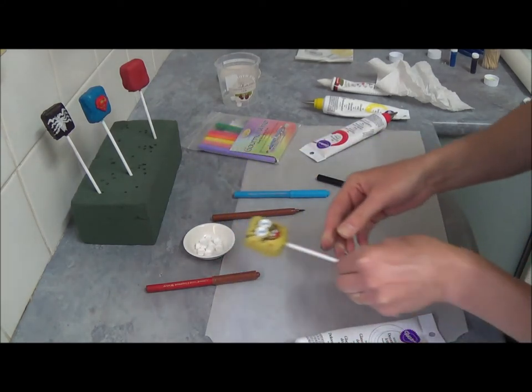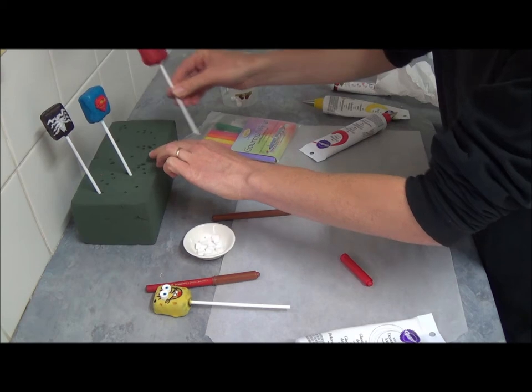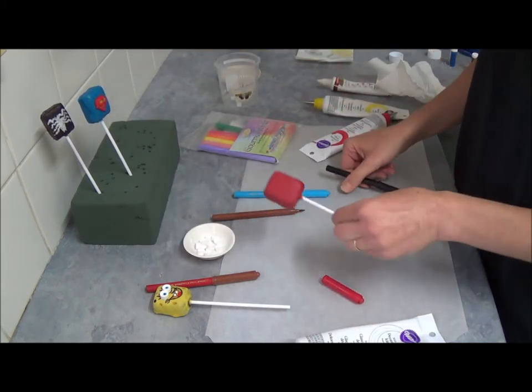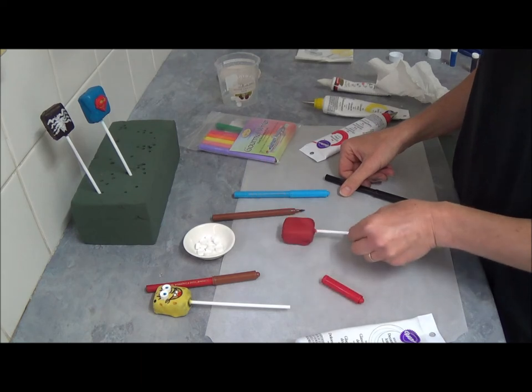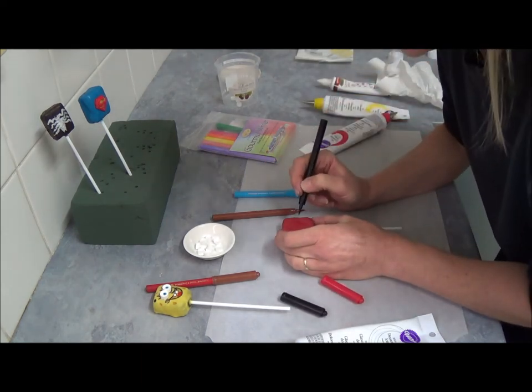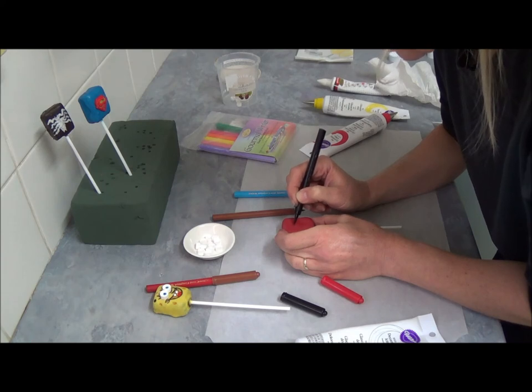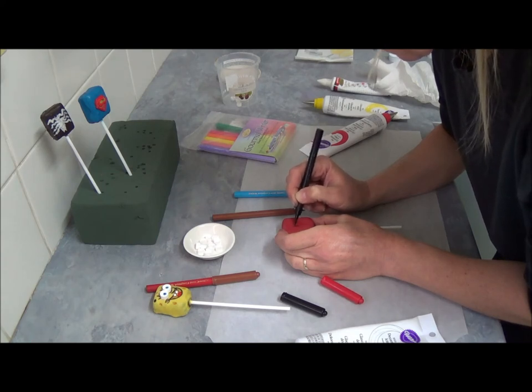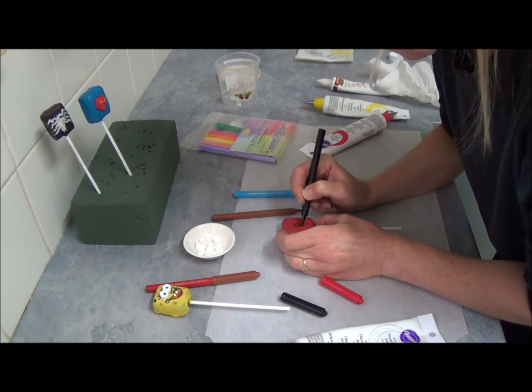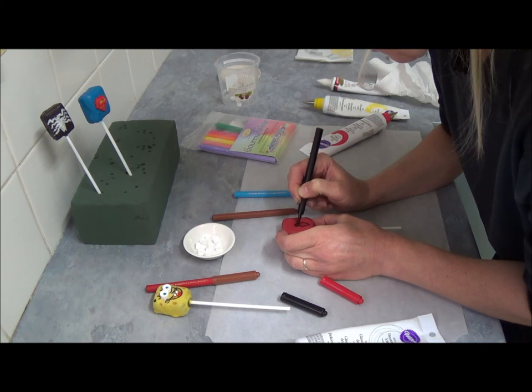Now for the mobile phone cover with Spiderman, it's very simple. We're using red candy melt. Once it's set, we simply draw our spider. Just outline first before you start.